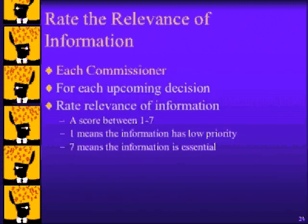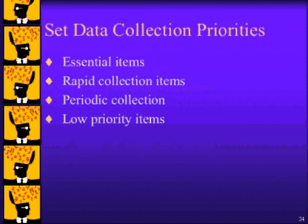Each commissioner rated the relevance of all 69 information items for their six upcoming decisions. They were asked questions such as the following: for each upcoming issue, assign a score between one and seven to each information item reflecting the need for the information. A score of one means the information has low priority. A score of seven means that the information is essential for addressing the issue. Next, the ratings are analyzed to identify four categories of data collection priorities. Essential items are important to most issues. Rapid collection items are important to many issues, but not all — these items need no action right now, but plans to collect the information if the need arises. Periodic collection items include items important on some issues but not many. Low priority items are ignored, as they are not important on nearly any issue.